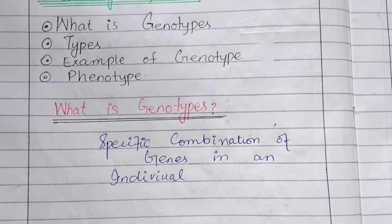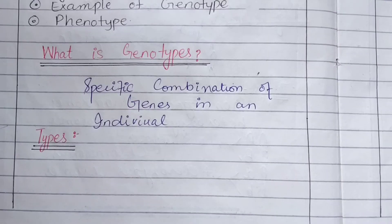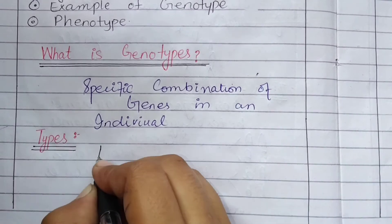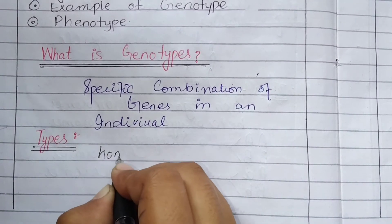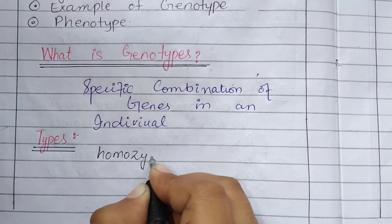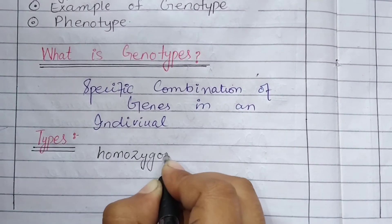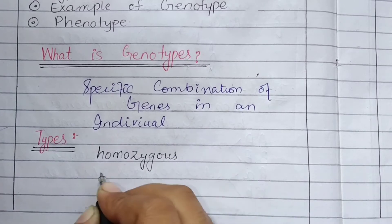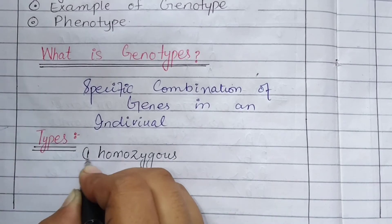There are two types of genotype. The first type is homozygous and the second type is heterozygous.